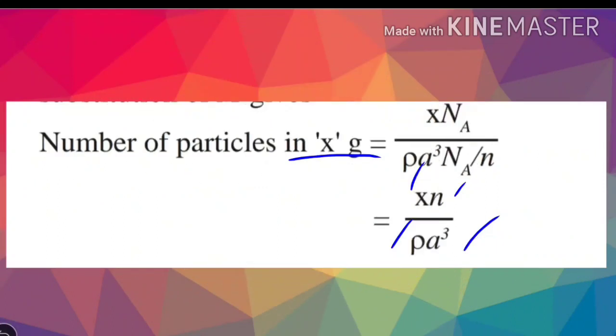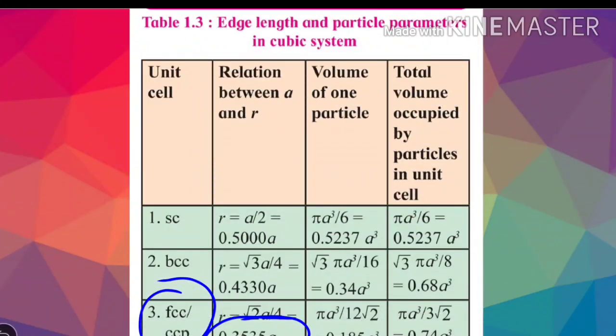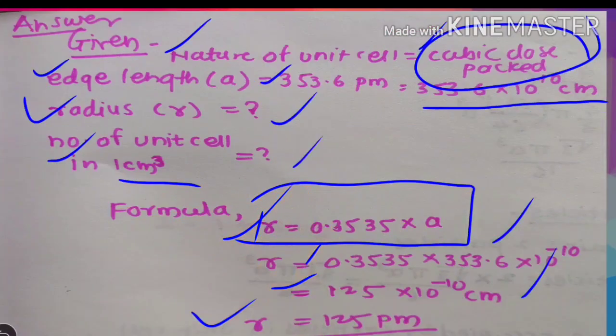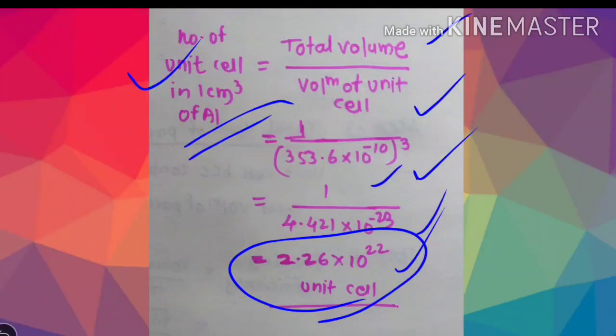Finally, the answer is 2.26 × 10²² unit cells. This is the number of unit cells that will be found in one cubic centimeter. This is the relation we have for the unit cells.